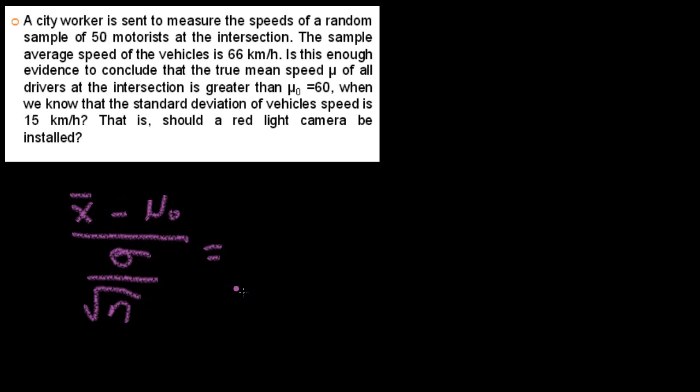This will give us a z value that we're going to be using to determine if it is statistically significant. If it is, then we can conclude that a red light camera would need to be installed because people are on average going faster than 60 kilometers an hour and actually going to about an average of 66. So let's just plug in the data and get an associated z value.